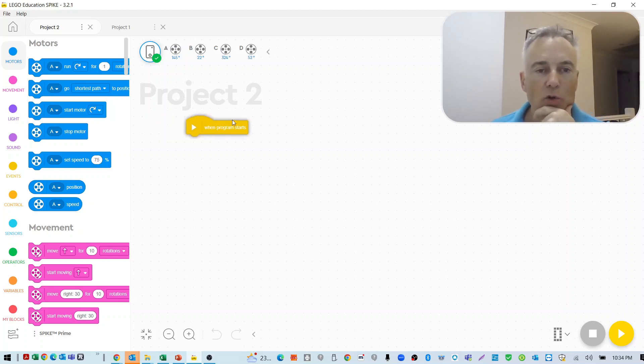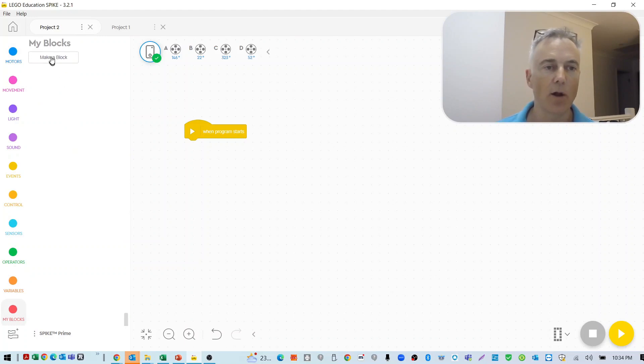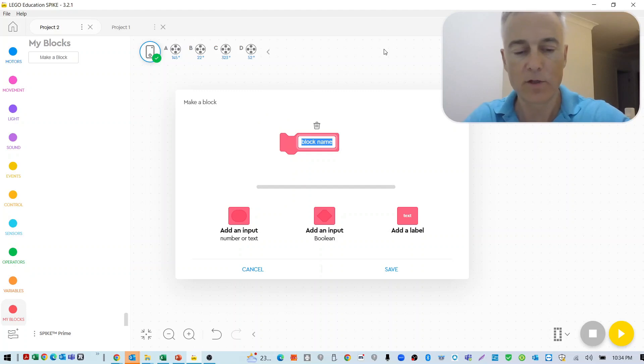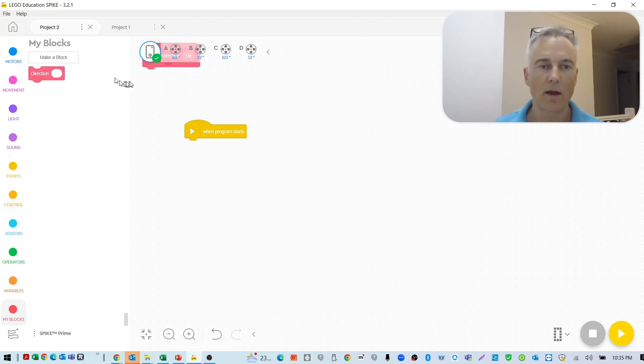Now, what we want to do is start producing an algorithm that allows us to program the robot to move it off in any direction. First thing we're going to do is grab a my block. So you come down and make a my block and we'll call this direction. So this is our my block, same as what we used before. We're going to input a variable as well. We're going to call this direction as well. So hopefully this will make sense in a moment. So we'll just save that. Come down. And we've got this block here that we're starting and I'm just going to attach that there when the program starts.